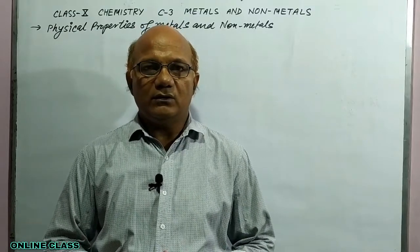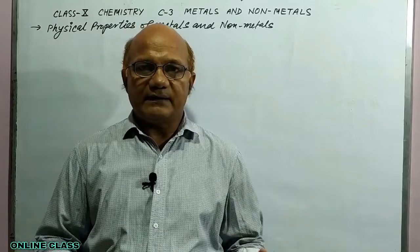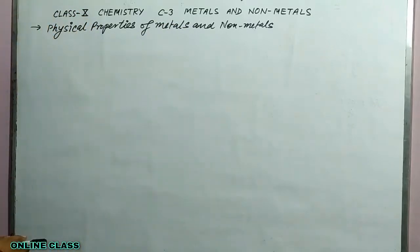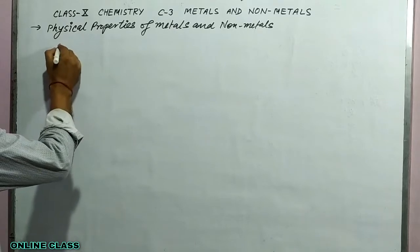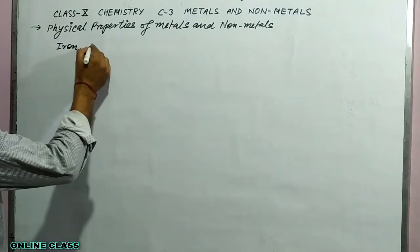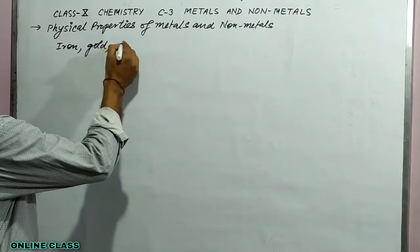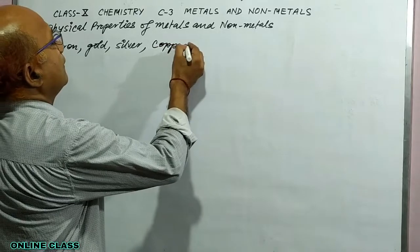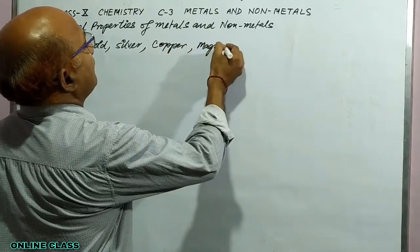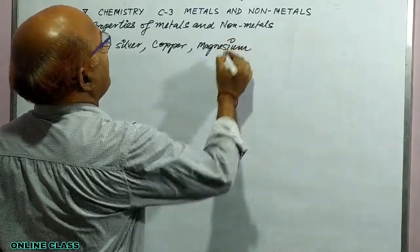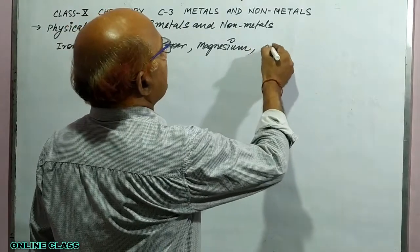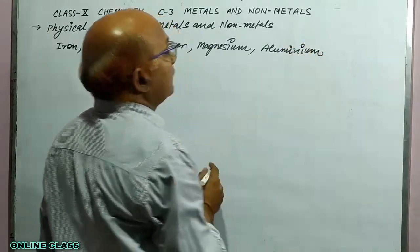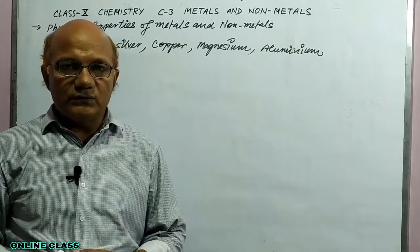As you know, in your daily life you have seen some metals which are in wide use. These metals are iron, gold, silver, copper, magnesium, and aluminium. These are some metals which are widely used in our daily life.